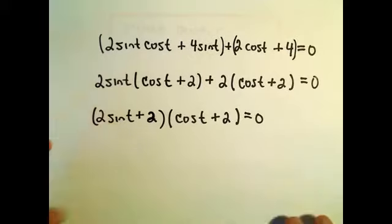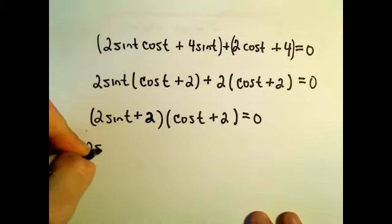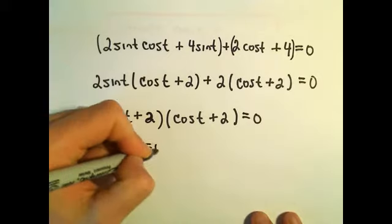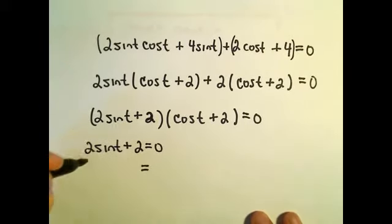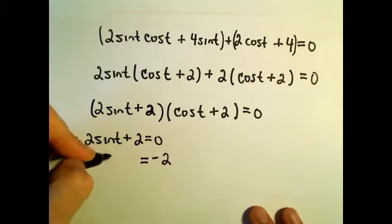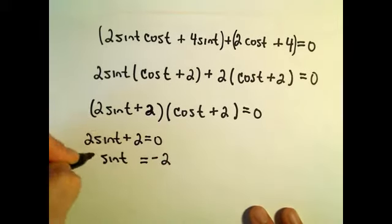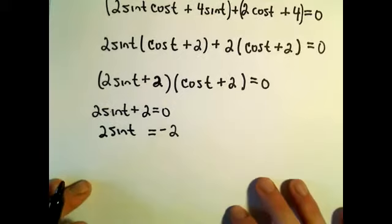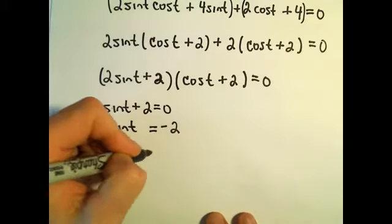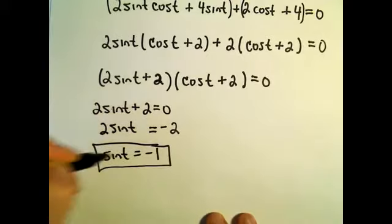And now we're simply just going to set each factor equal to 0. So 2 sine t plus 2 equals 0. We could subtract 2 from both sides. Then we would have 2 sine t equals negative 2. Just divide both sides by 2. That will give us sine of t equals negative 1.